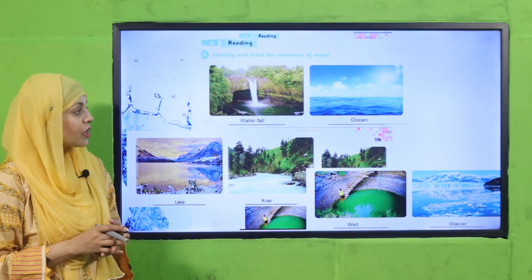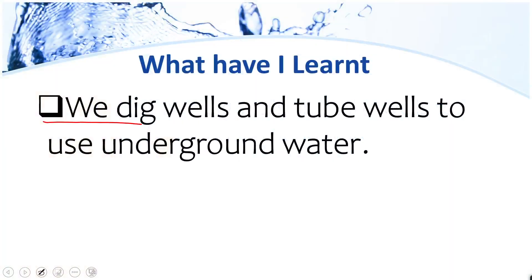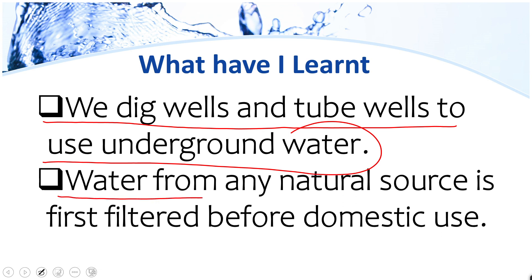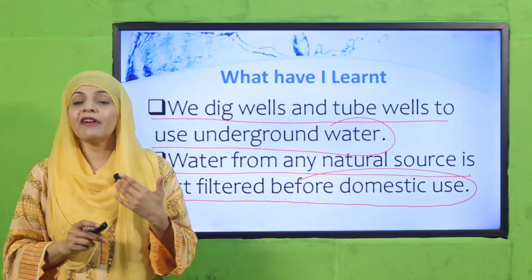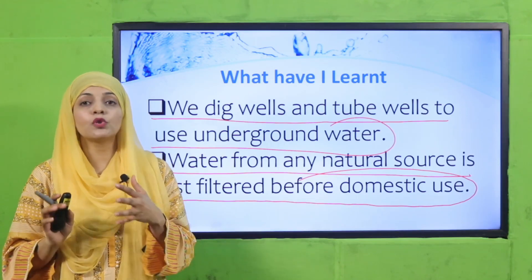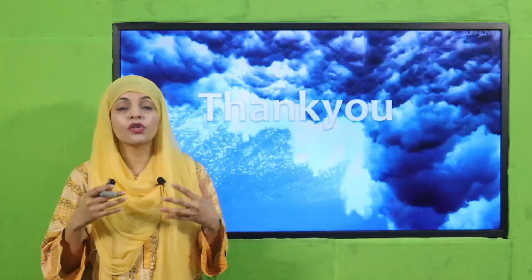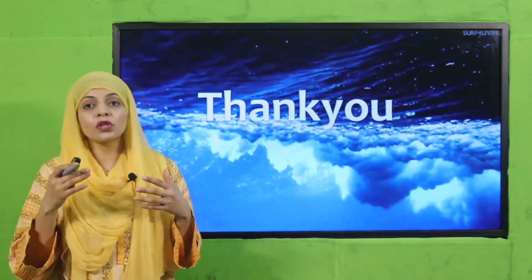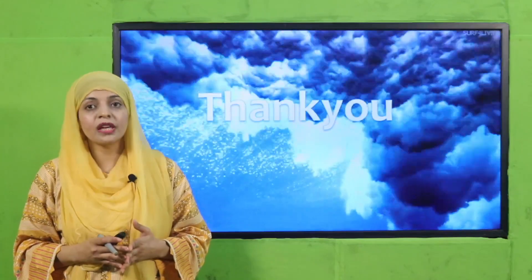I hope everybody has finished it. Let's quickly wrap up what we have done and learnt today. We dig wells and tube wells to use underground water. Water from any natural source is first filtered before domestic use — so from natural resources, paani ko cleaning plant ke andar laya jaata hai, wahaan cleaning hoti hai, phir store kiya jaata hai, and then it is pumped to the houses of different people. This was the journey of water from a natural resource to your house. I hope you have understood it. Keep everybody around you safe, have a good day, thank you so much, and Allah Hafiz.